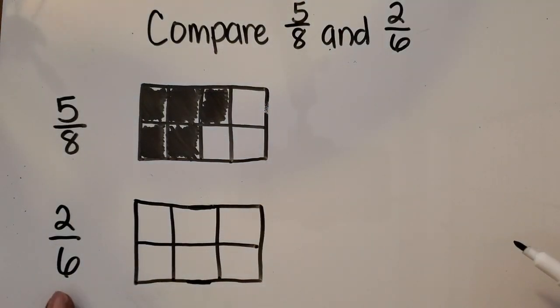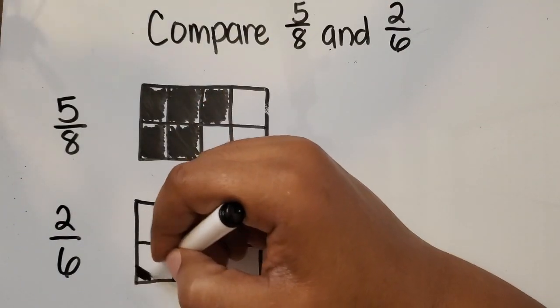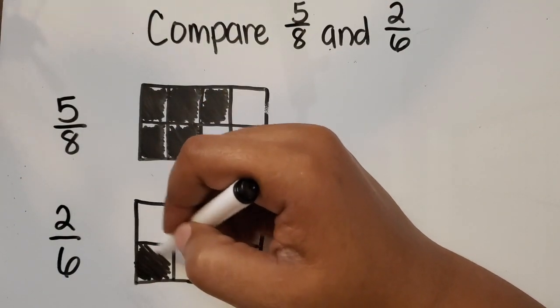And down here we're going to represent 2 of those 6. We're going to shade in 2 of those 6 equal parts.